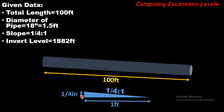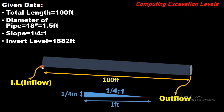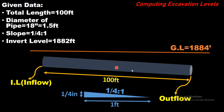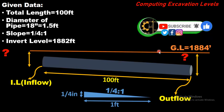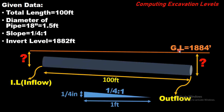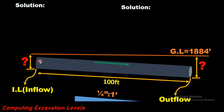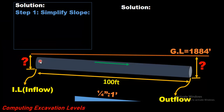The invert level is also given in the data. The invert level is the level where water enters into the pipe without any obstruction — it is the inner level of the pipe so that water can enter without resistance. This is the inflow side and this is the outflow side, and the slope is in the outflow direction as you can see from the tilt of the pipe. The ground level will be taken as a datum, or reference point. Using this reference point you will determine how deep to excavate to lay down this pipe.